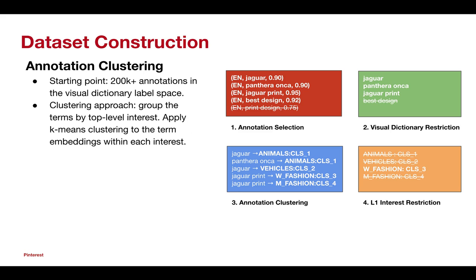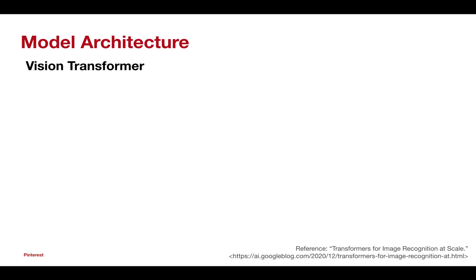Second, we cluster semantically related annotations to reduce the size of the label space. We adopt this strategy due to the challenges of extreme classification with regards to label completeness and computational requirements. In particular, we organize terms according to their predicted top-level interests and cluster within each of these interests in order to address polysomy in the label space. For example, this enables us to distinguish the jaguar brand of cars from the jaguar type of animals in the label generation process.